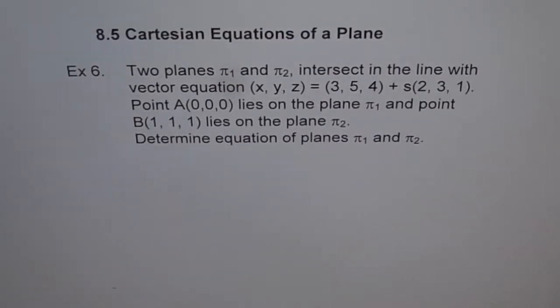8.5 Cartesian equations of a plane. Example 6. Two planes, π₁ and π₂, intersect in the line with vector equation (x, y, z) equals (3,5,4) plus s(2,3,1). Point A lies on plane π₁ and point B lies on plane π₂. Determine equations of π₁ and π₂.